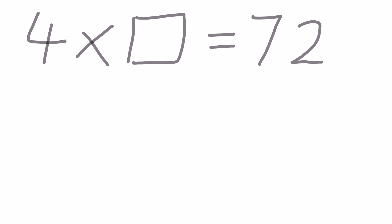Another way to solve it would be to use rounding and compensating. If we did 4 times 10 before, that went underneath 72, so this time we want to do a tidy number above 72. So we'll do 4 times 20.